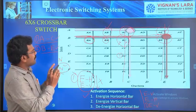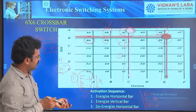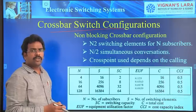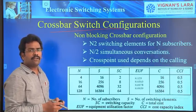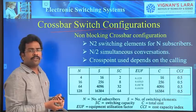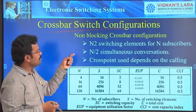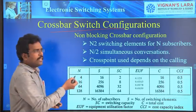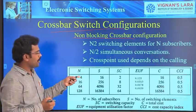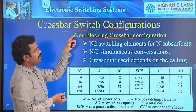As engineers, our objective is to utilize the cross-points effectively. We should not waste cross-points because the cost increases as the number of cross-points increases. You also have to look into the utilization factor. If the utilization factor is more, the result is good; if it is less, the result is bad. Now we will see the configurations for a non-blocking crossbar system. Taking the example of 4 subscribers: for N subscribers, it requires N² cross-points in case of non-blocking. So for 4 subscribers, that is 16 cross-points.